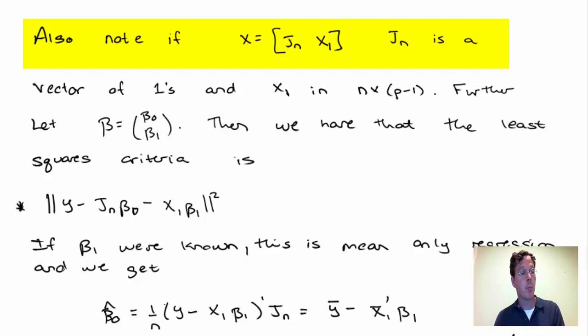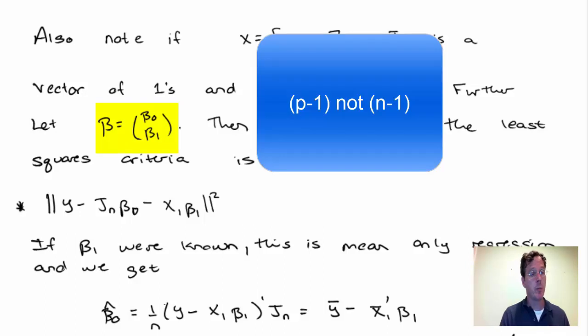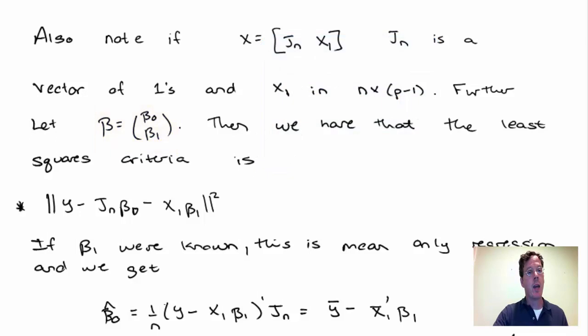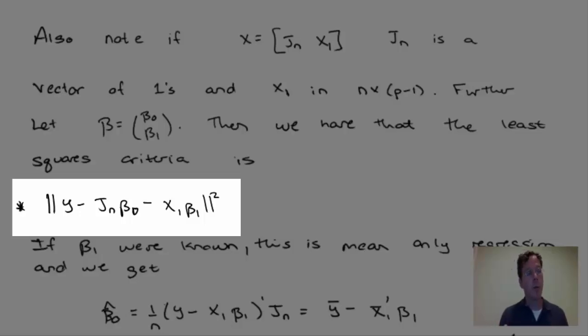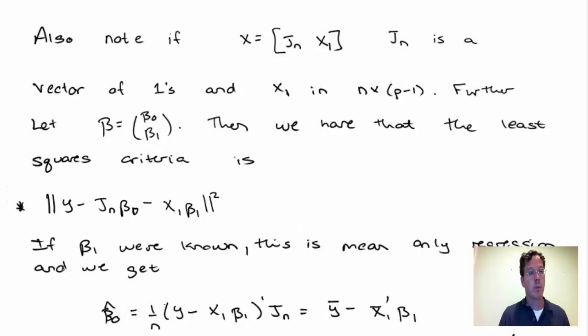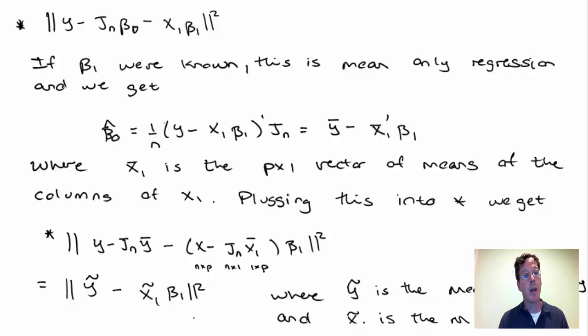So if x contains a vector of ones, so x equals jn as the first column, and let's write x1 as everything else, the p minus 1 next set of columns. Then x1 is n by p minus 1. And our beta is beta naught, the intercept, and beta 1, an n minus 1 dimensional vector of parameters for the remaining terms. Then we have that the least squares criteria is to minimize norm squared y minus jn beta naught minus x1 beta 1. If beta 1 were known, this is mean only regression, and we know that beta naught hat has to equal y bar minus the column wise average of x1 transpose times beta 1.